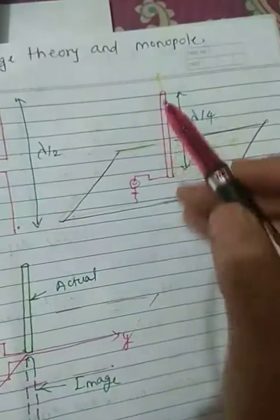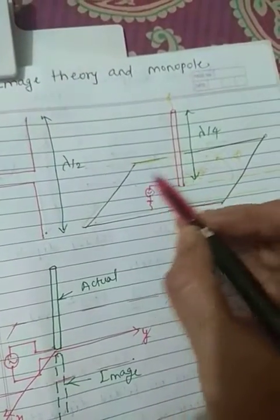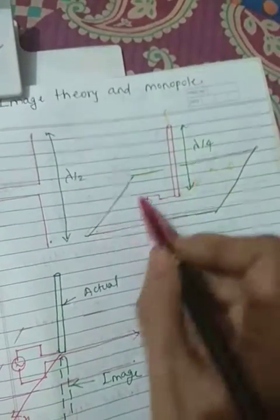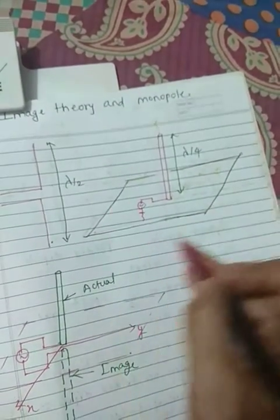Now we have seen monopole and its ground plane. So all the integrals will be evaluated only in this hemisphere. Since this is ground, no integral will be evaluated in this lower hemisphere.